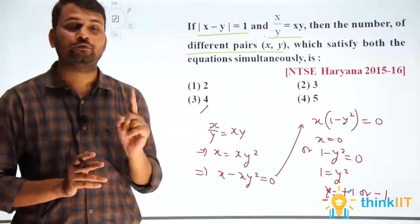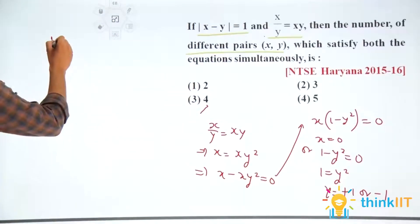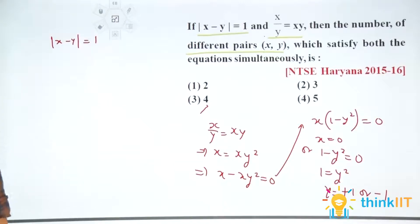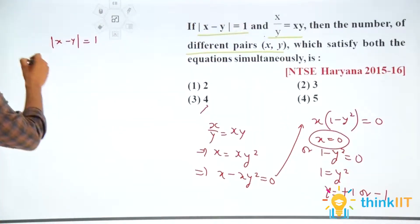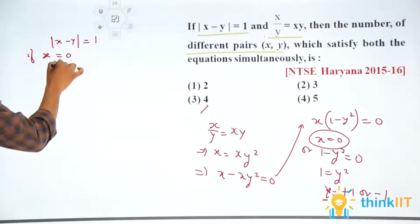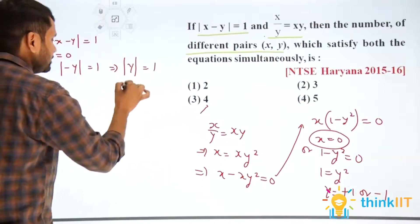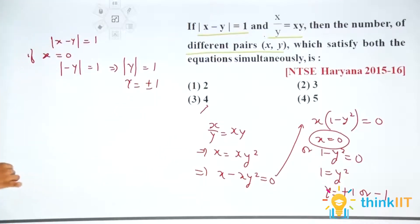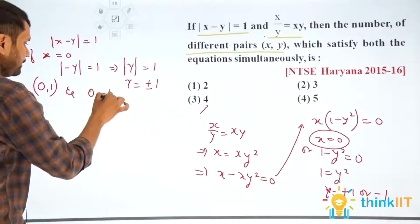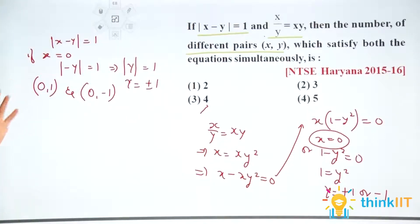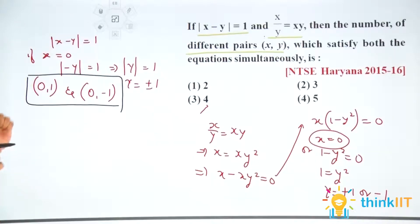We have x equals 0 or y equals plus or minus 1 as conditions from the second equation. Now apply the first equation mod of x minus y equals 1. Taking the first condition where x is equal to 0: the equation reduces to mod y is equal to 1, which means y is equal to plus or minus 1. So the solutions from this case are the pairs (0, 1) and (0, −1).